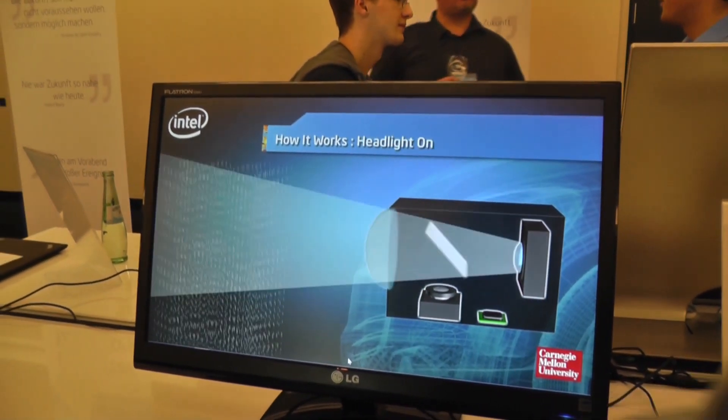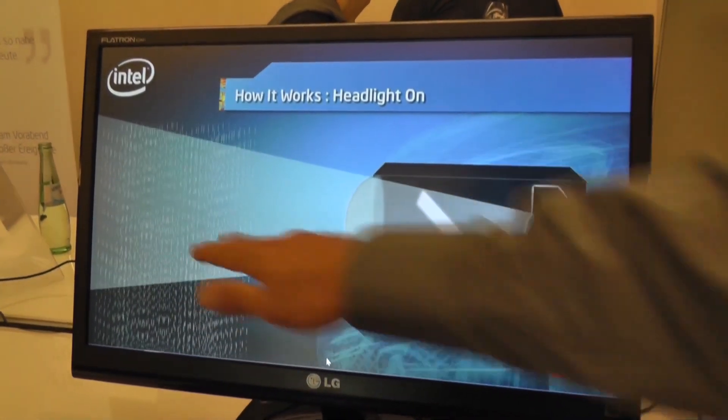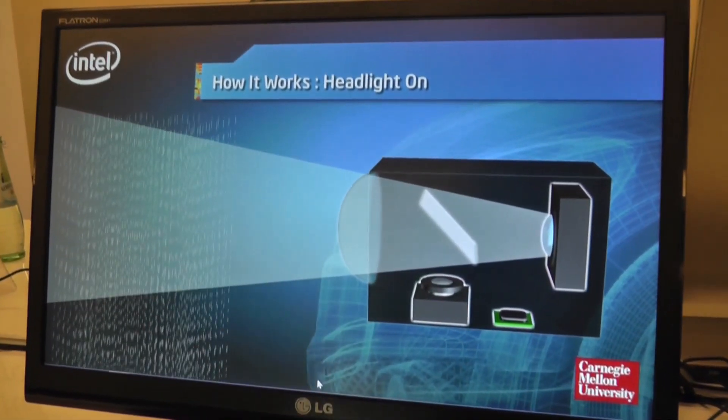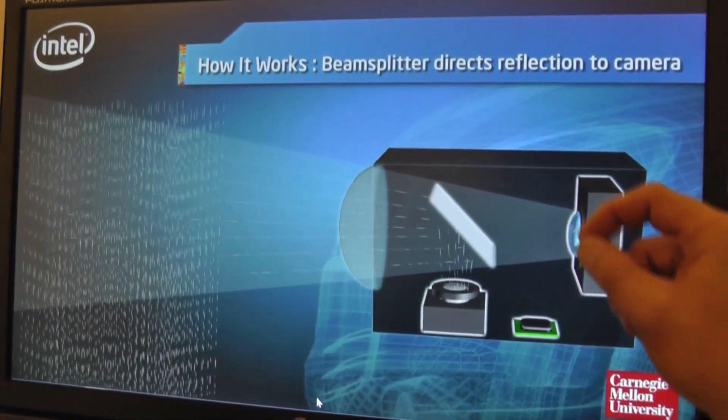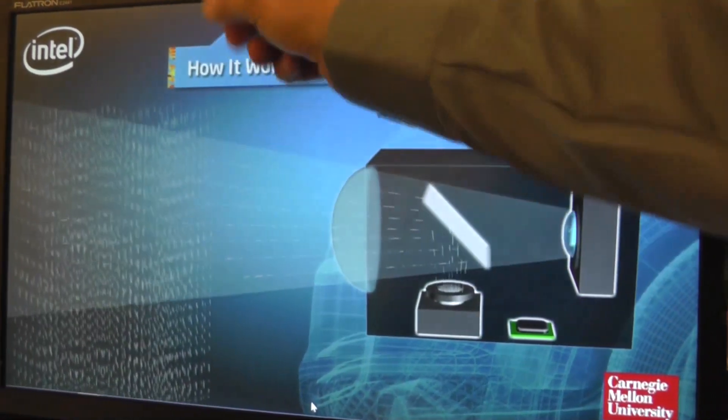Today when you turn on your headlight you have 100% illumination and you're seeing 100% of the rainfall coming down. What we're doing is we're looking and analyzing those raindrops as they fall through the path or the beam of the headlight.